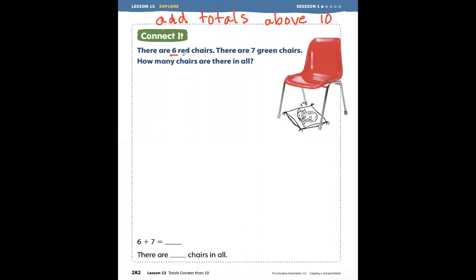There are six red chairs. There are seven green chairs. How many chairs are there in all? Well, if there are six red and seven green and we want to know in all, those are joining words, right? We're going to put it together. That tells me that six has to be a part and seven has to be a part, and we are going to join them together to make the whole.